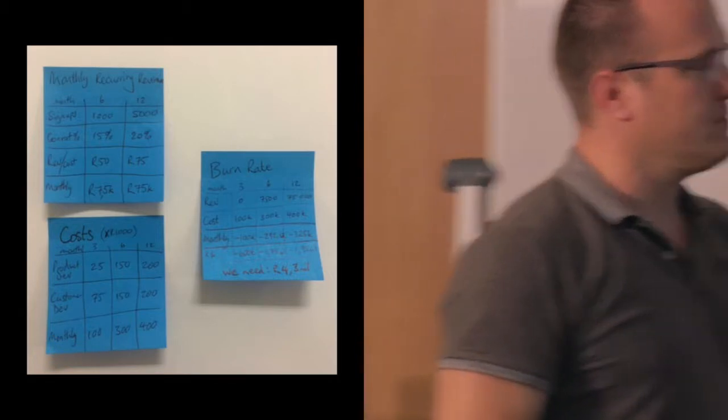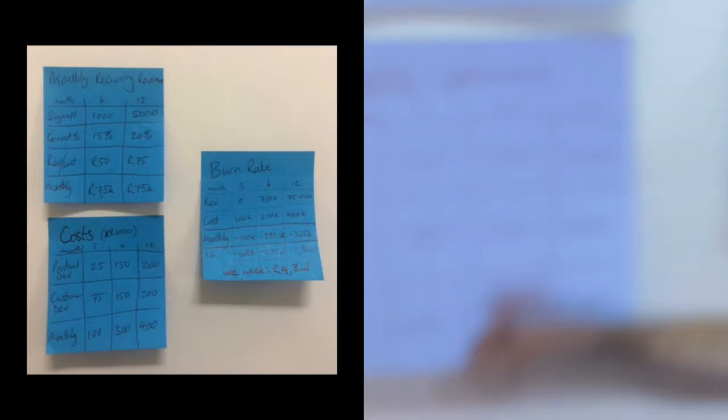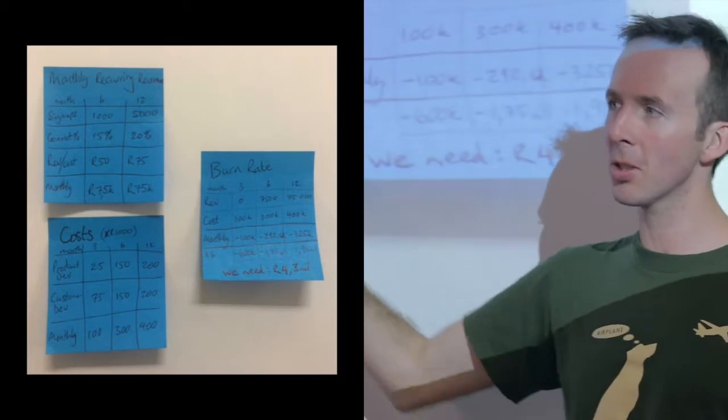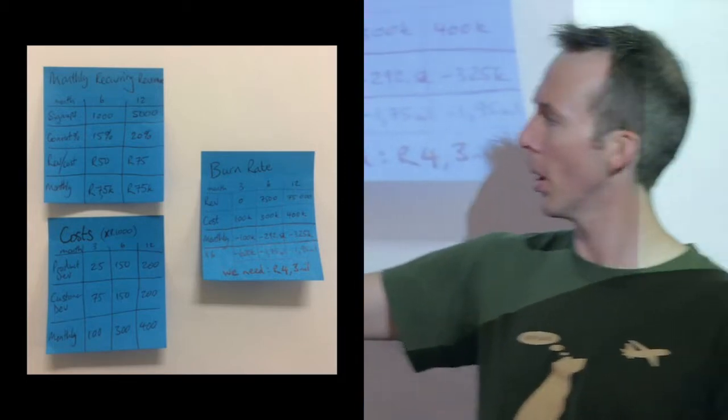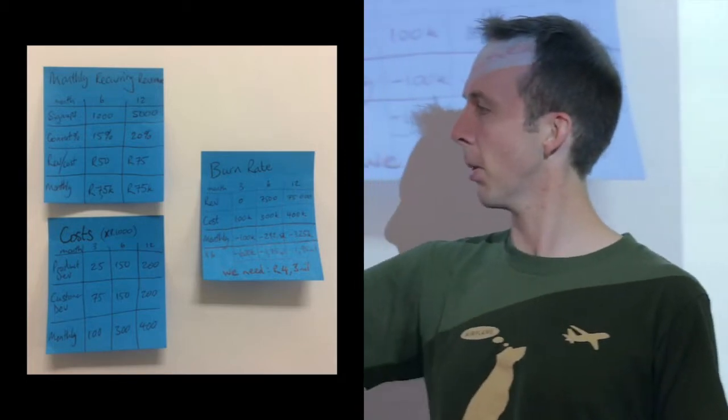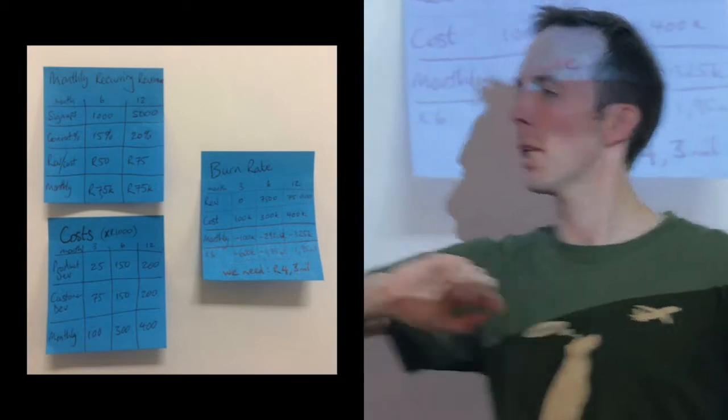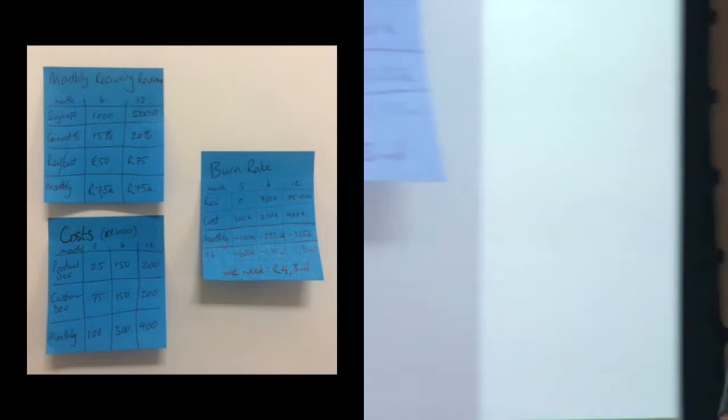This is as complicated as you can get. If this seems too complicated, just do one column. This is three months, six months, and twelve months, but if it's too complicated, just say I'm gonna spend so much on my product and this is my side. This is one example—ignore what's in that example.